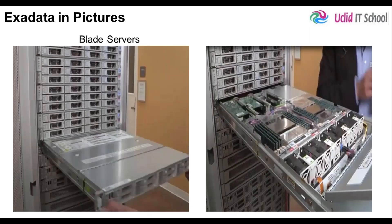Here you can see one of the servers pulled out — these are blade servers. The server chassis is open and you can see the standard hardware inside. Depending on the configuration you purchase, you will have many database servers and many storage servers inside the rack.